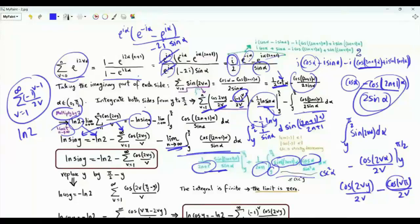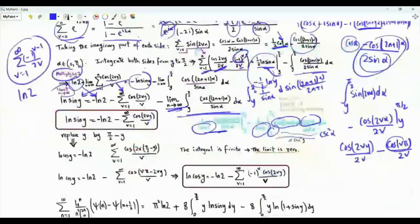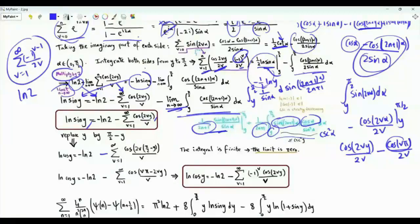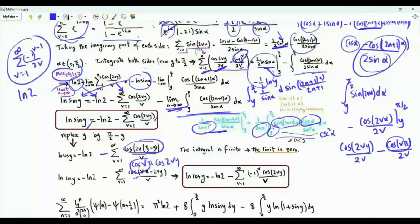To get the representation for ln(cosine y), we replace y by pi/2 minus y on both sides. We get ln(cosine y) equals minus ln 2 minus summation v from 1 to infinity of cosine(2v(pi/2 minus y)) over v. The argument is cosine(vπ minus 2vy), which equals cosine(vπ) cosine(2vy) plus ... , and cosine(vπ) equals minus 1 to the v. This gives the series representation for ln(cosine y).